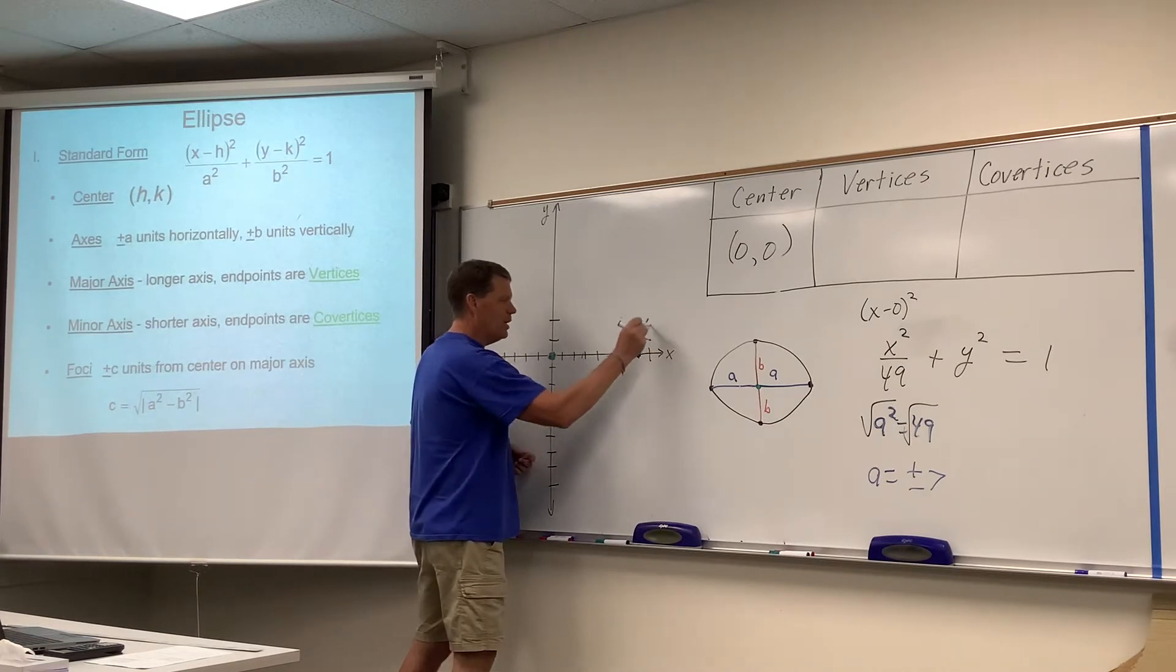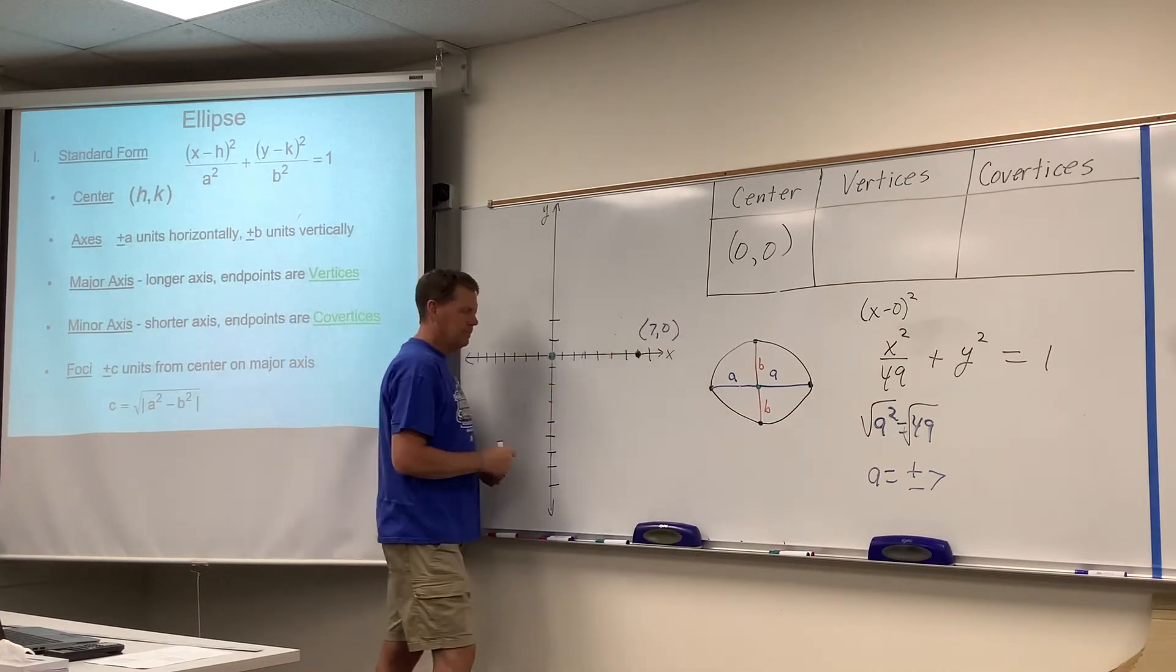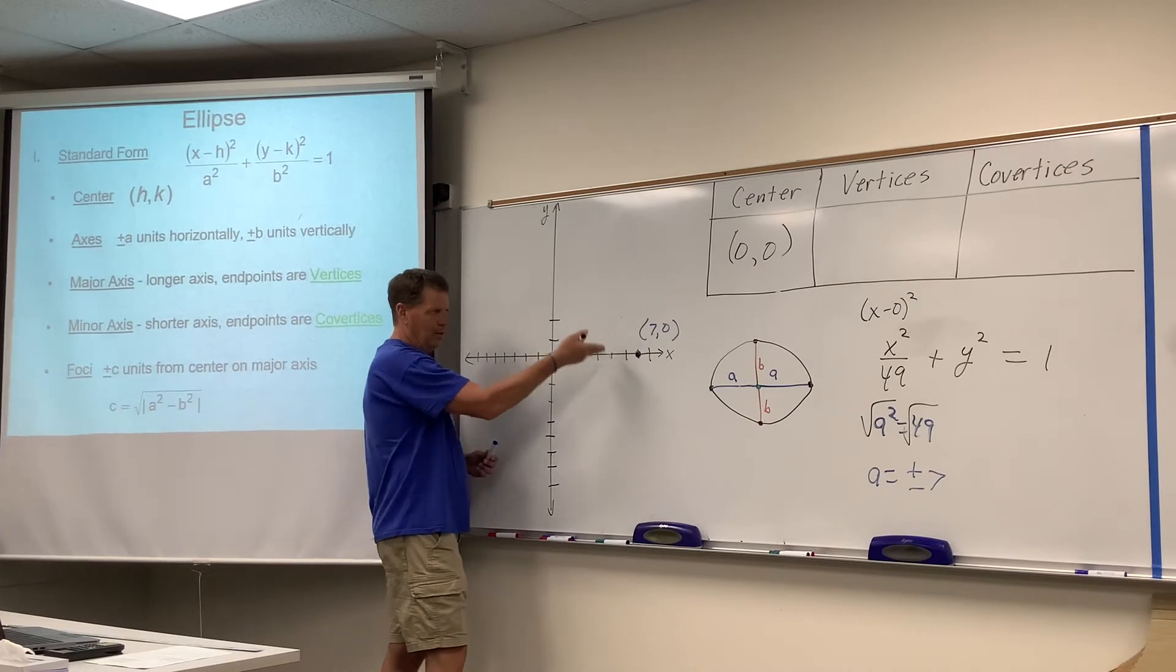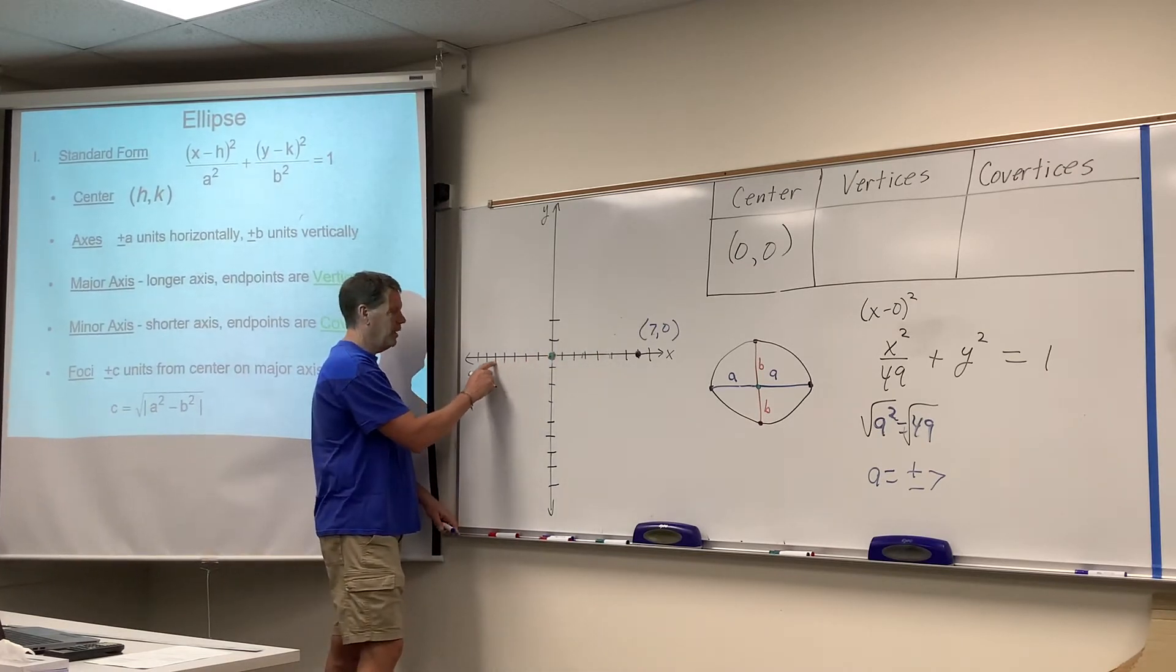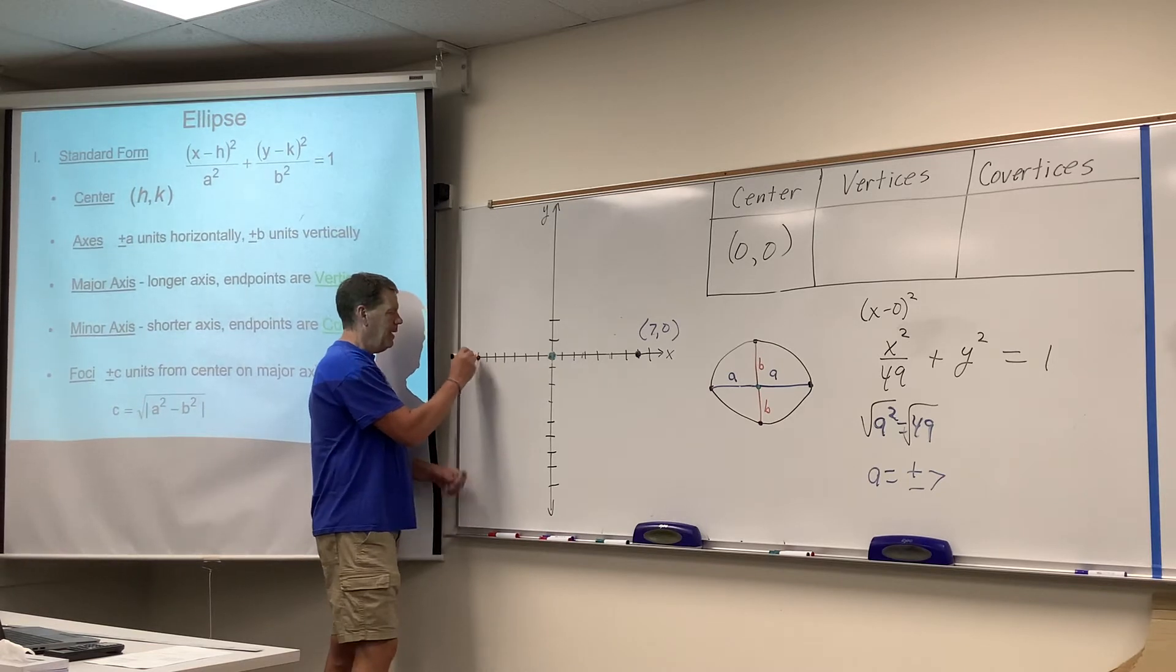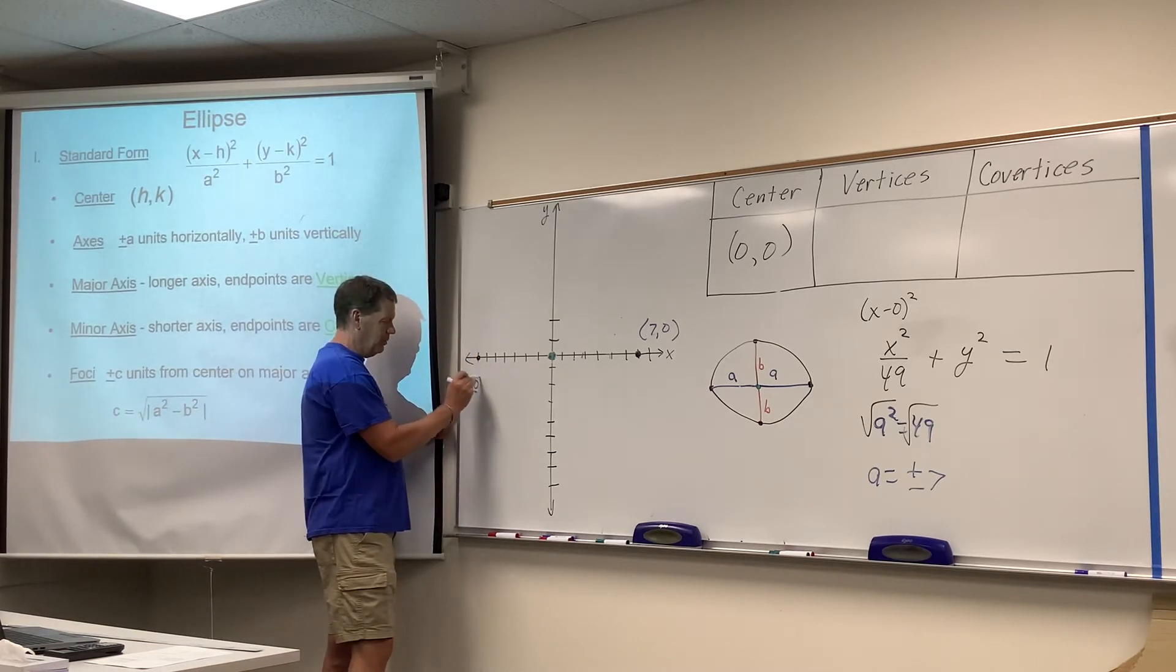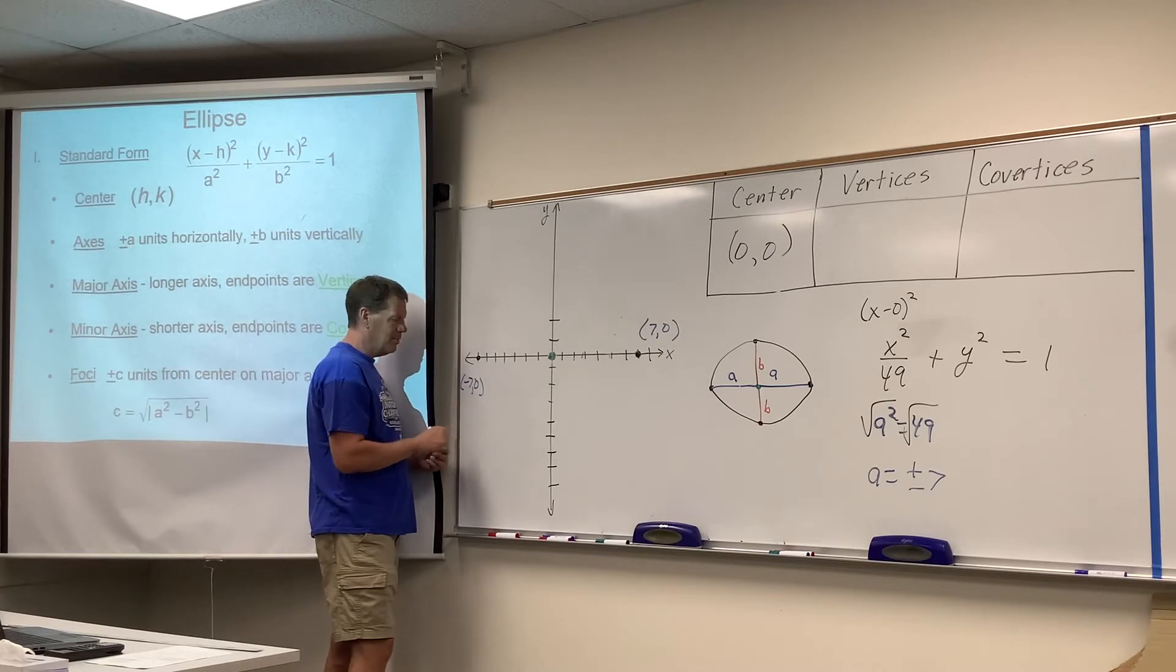And would that ordered pair be 7, 0? x is 7, y is 0. 7 units this way, 1, 2, 3, 4, 5, 6, 7. And, I believe that ordered pair would be negative 7, 0, wouldn't it? Negative 7 comma 0.